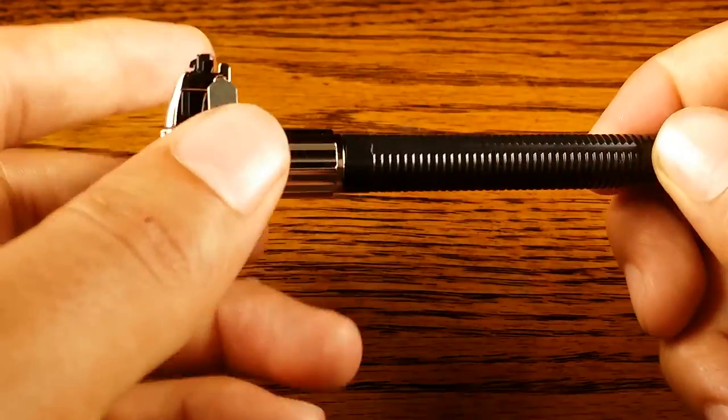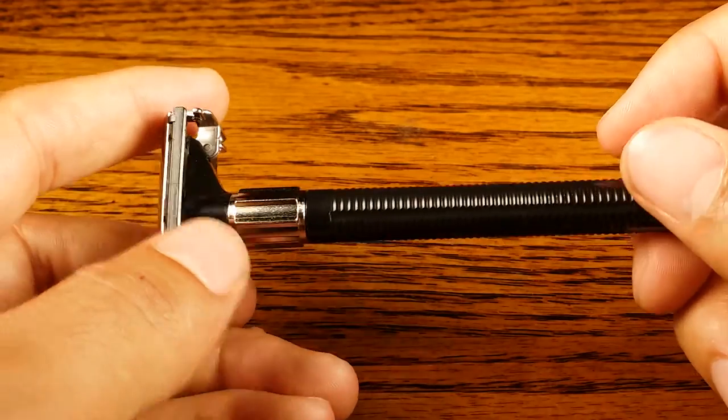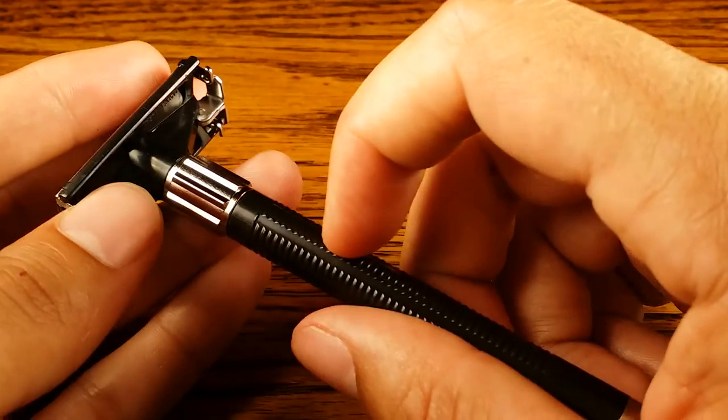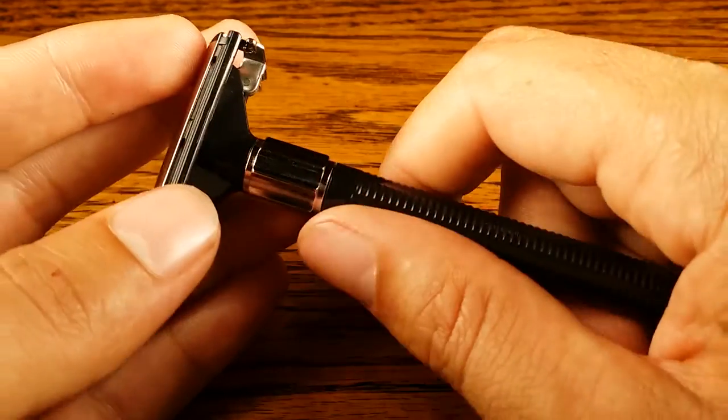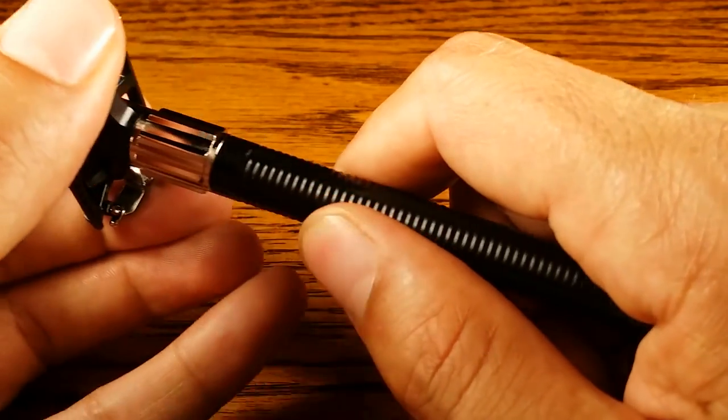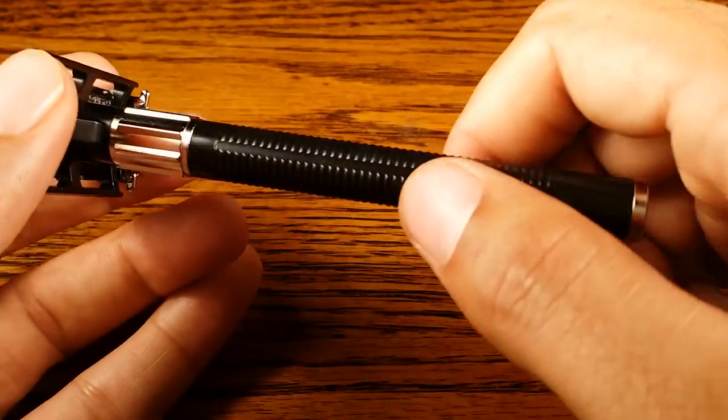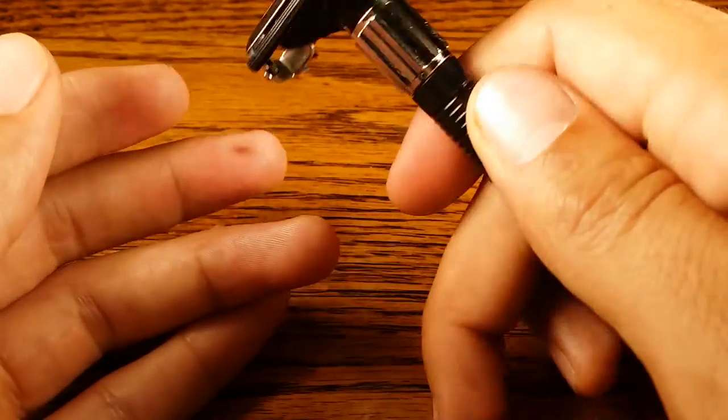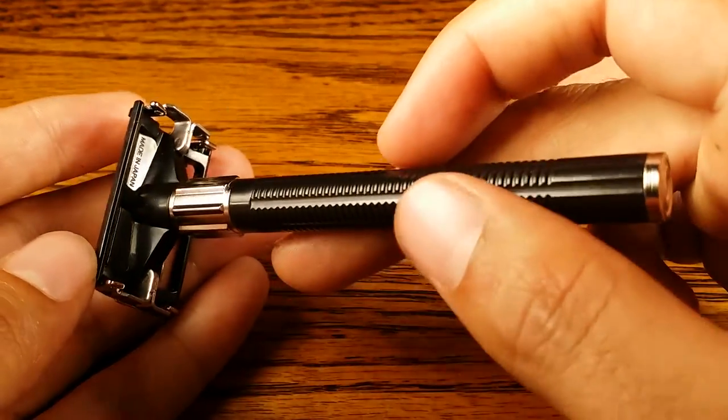In terms of the grip, it does have these horizontal grooves right here that are plastic which actually provide a decent grip. Going up and down it's a lot better than vertical grooves or no grooves at all. You shouldn't have any trouble with it slipping out of your hands anytime soon.